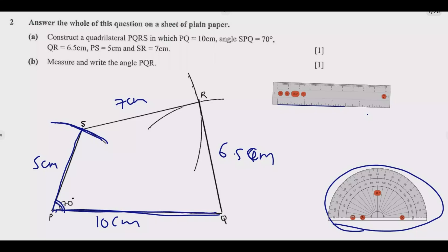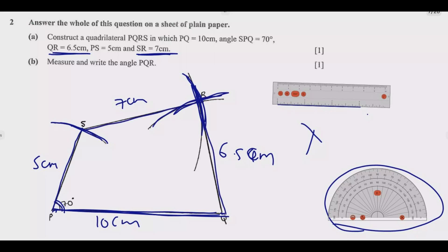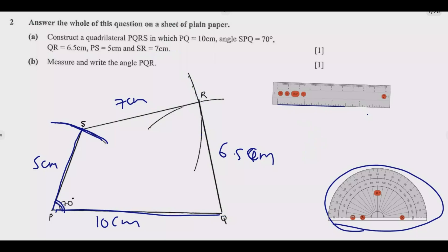Once you have drawn PQ and located S, the next step is to measure 7 centimeters with the compass for SR. Pin the compass at S and make an arc. Then come to Q where PQ ends and measure 6.5 centimeters with the compass, making another arc. Where these two arcs intersect, that is point R. Join the points and you will end up with the complete quadrilateral, drawn cleanly and correctly.